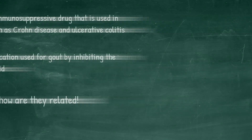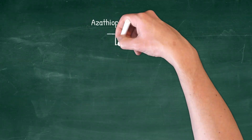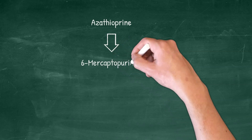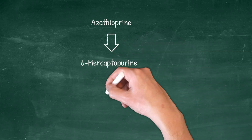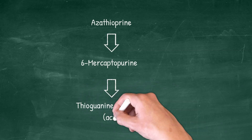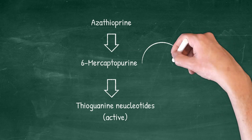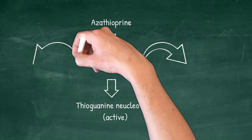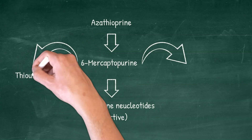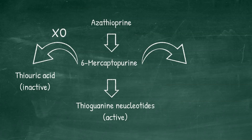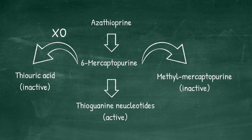Azathioprine is a prodrug that gets metabolized into 6-mercaptopurine, which itself gets metabolized into the thioguanine metabolites responsible for the pharmacological action of azathioprine. Additionally, 6-mercaptopurine gets inactivated by two pathways: the main one into thiouric acid through metabolism by the enzyme xanthine oxidase, and the other into methylmercaptopurine.